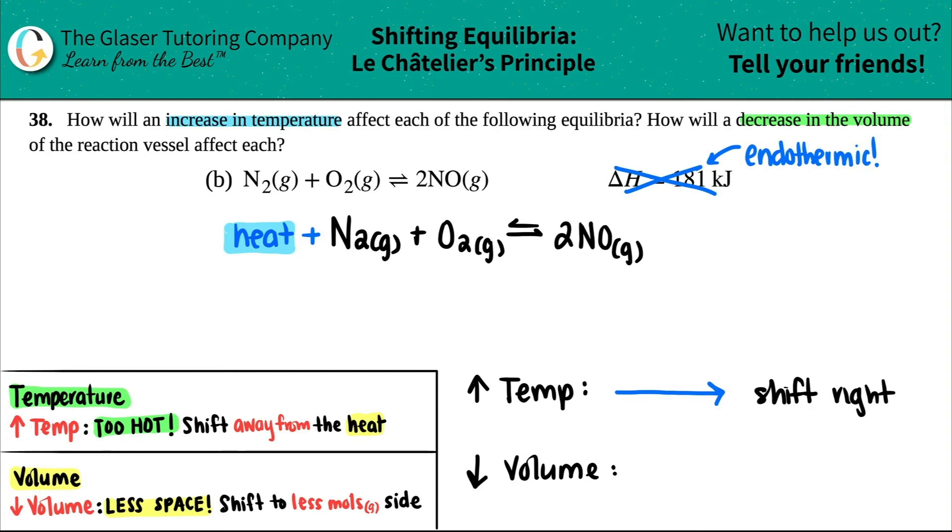So look at those coefficients. I see that I have nothing in front of the N2, that means I have one N2. I have nothing in front of the O2, that means I have one O2. So one plus one, I have a total of two moles on my reactant side. And then I have a two in front of the NO, and all these are gases, that's why I take them into consideration. So there's two total moles on the product side.